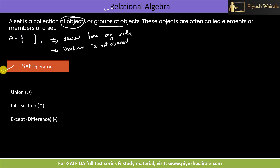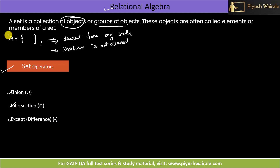There are a few different set operators: union, intersection, and except or difference — that is minus. We are going to discuss these one by one. But we are not focusing on the set theory part in this particular video; we are focusing on the relational algebra aspect of these set operators.